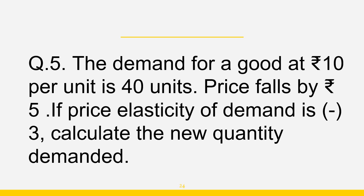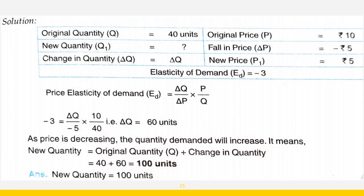Question 5: demand for a good at Rs.10 per unit is 40 units; price falls by Rs.5 and price elasticity is minus 3 — calculate new quantity demanded. Original quantity is 40, original price is 10, price falls by 5 so new price is 5, delta P is minus 5. Since price is decreasing, demand will increase so delta Q is positive. ED equals delta Q by delta P into P by Q: minus 3 equals delta Q by minus 5 into 10 by 40, so delta Q equals 60 units. New quantity equals 40 plus 60 equals 100 units. Thank you.